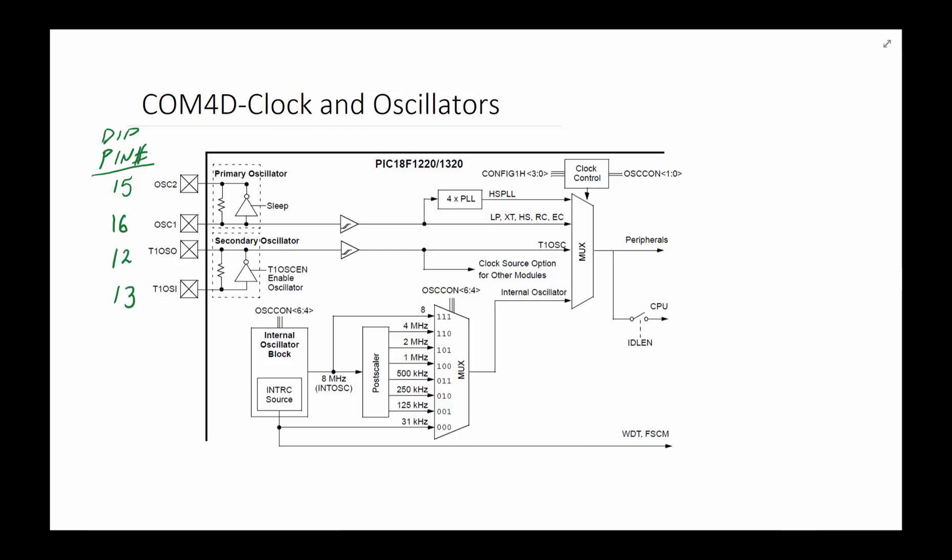The PIC 18F 1220 can also use a crystal, so you could hook up your crystal to oscillator one and oscillator two as the primary driver. In addition, it has the capability of putting the oscillator to sleep to save power — remember these are built out of CMOS, so if you're not clocking it you're not using power. There is also a secondary oscillator and other options that can be used with this processor.